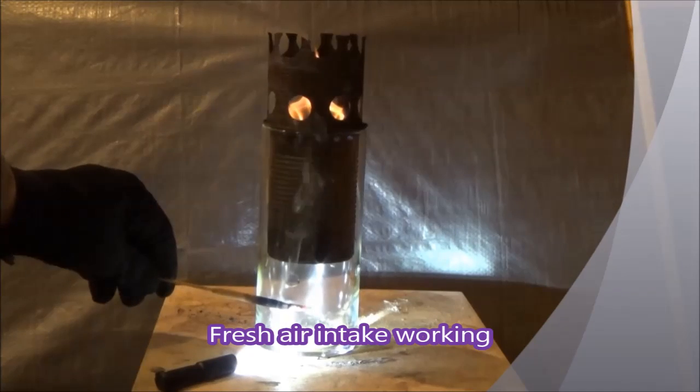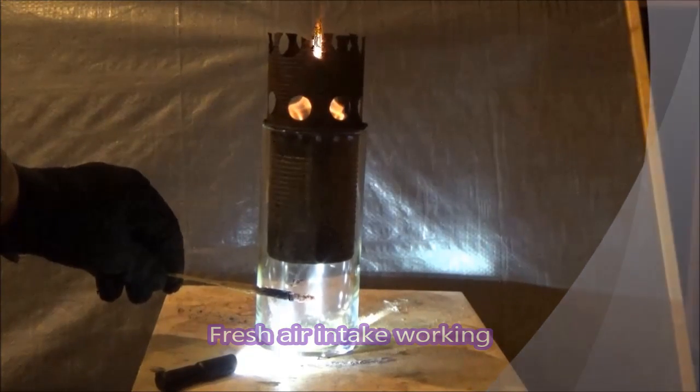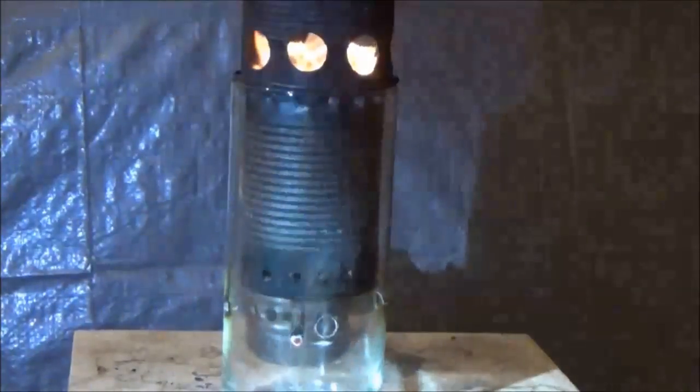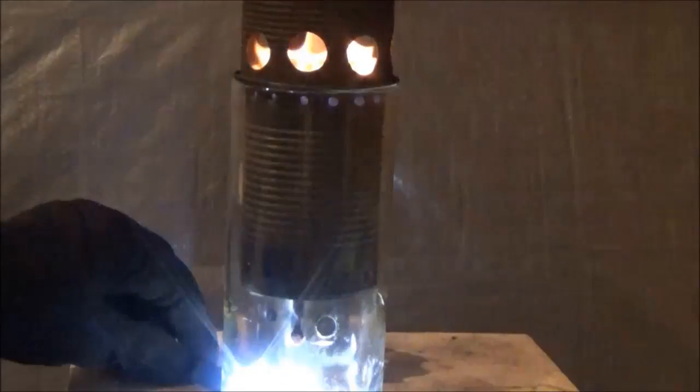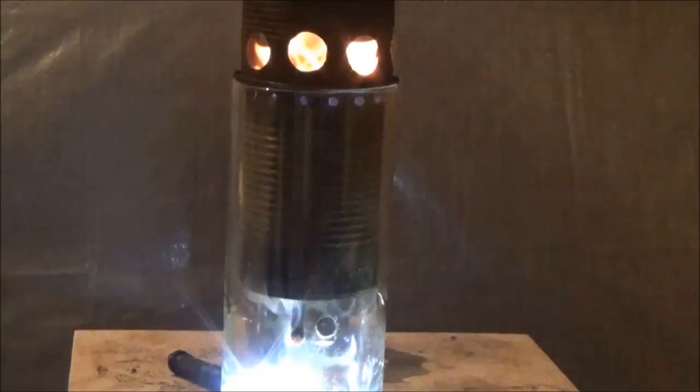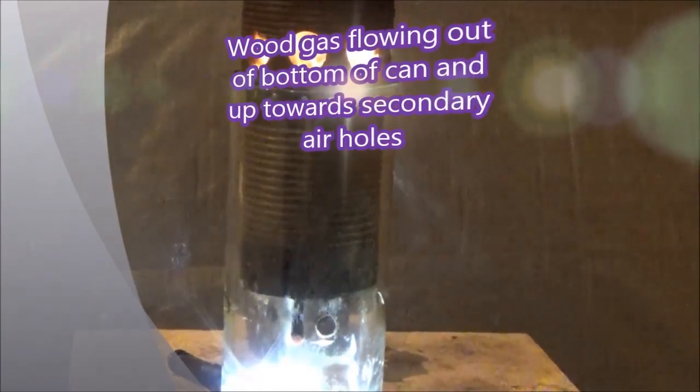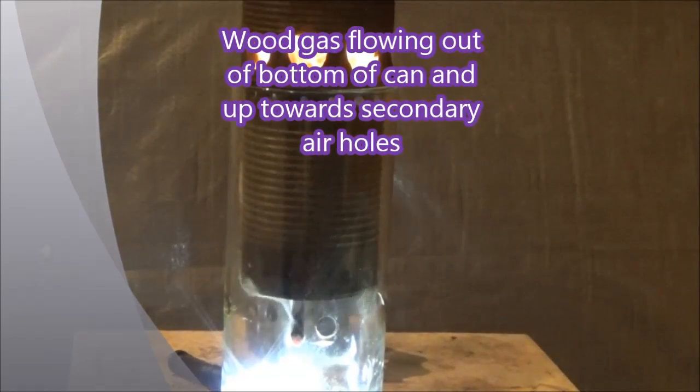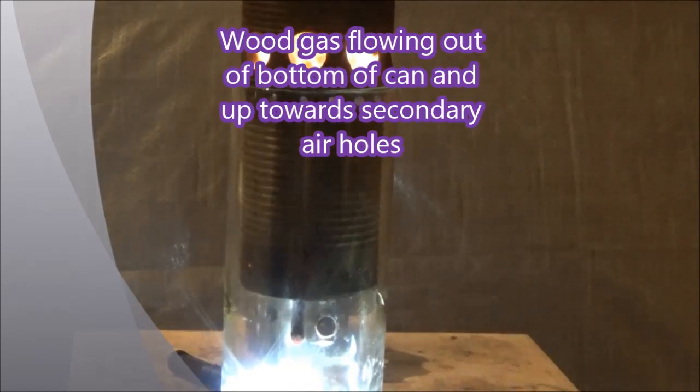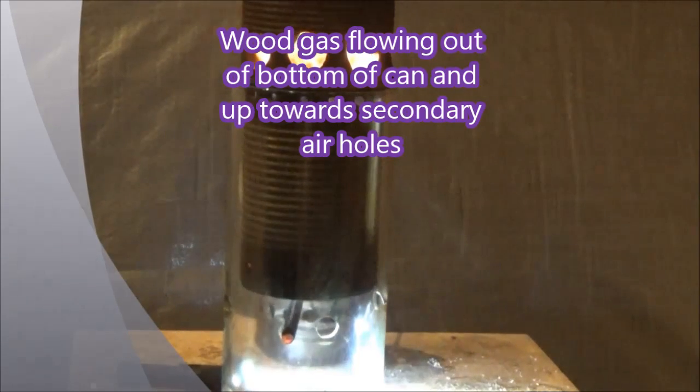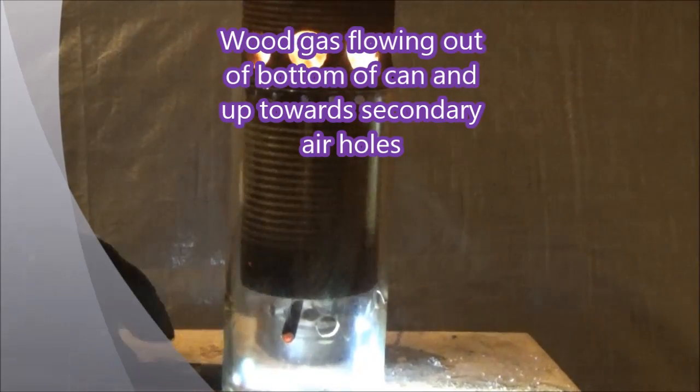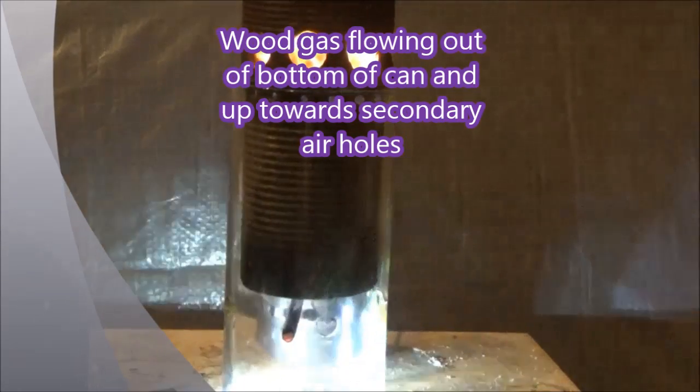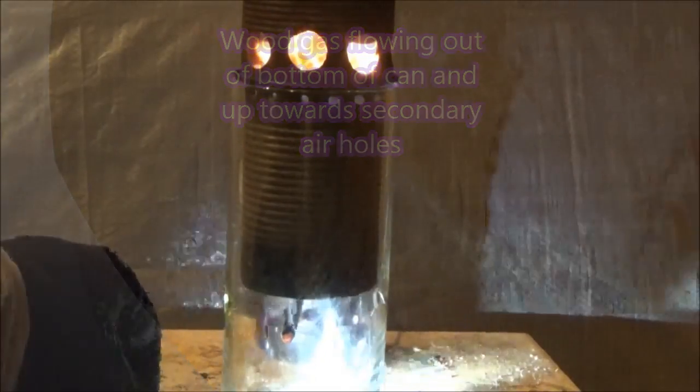Here you can see the fresh air intake working as it pulls the smoke into the stove. Here's another view of the air and smoke being pushed down out of the primary air ports, and then the smoke moves up the sides of the can towards the secondary air holes. You normally can't see the wood gas being pushed out of the bottom of the primary air ports. That's why I'm using smoke to allow us to trace those air flows.